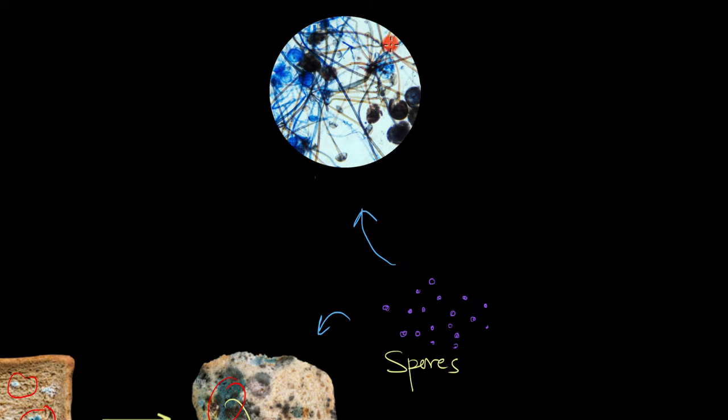Now these growing fungi will develop these tube-like filaments called hyphae. The singular form is called a hypha. These hyphae will eventually form a network, an entire network of hyphae. And this network is called a mycelium.